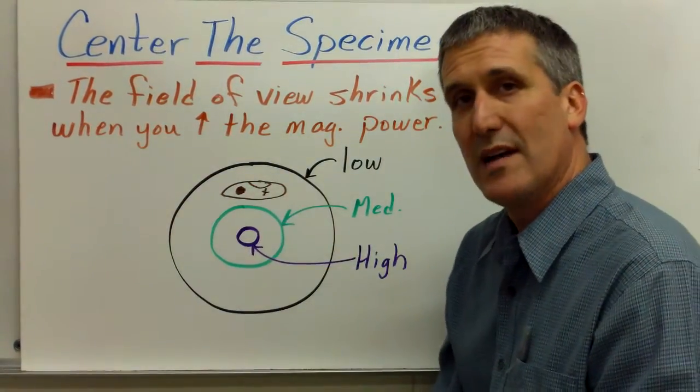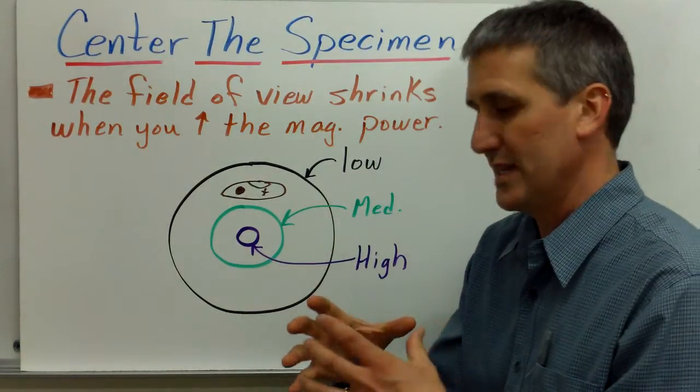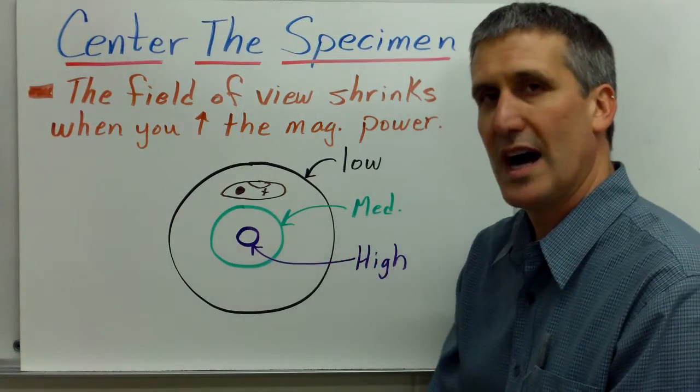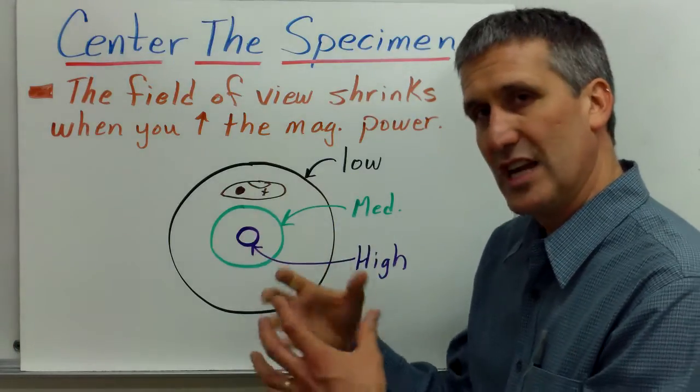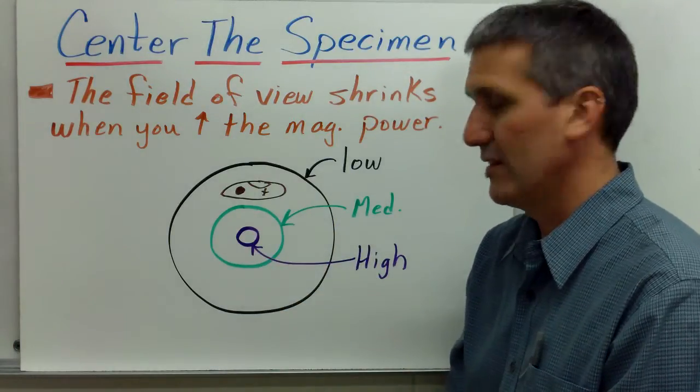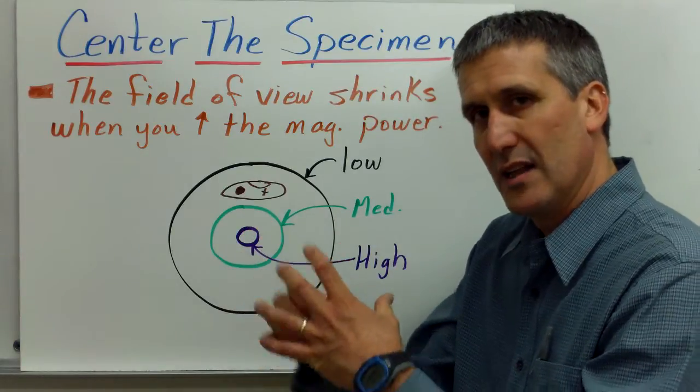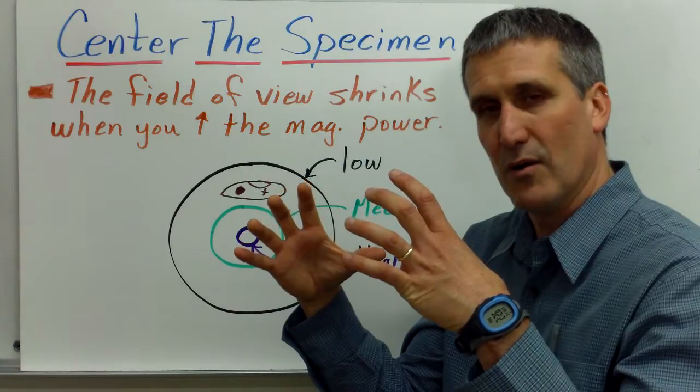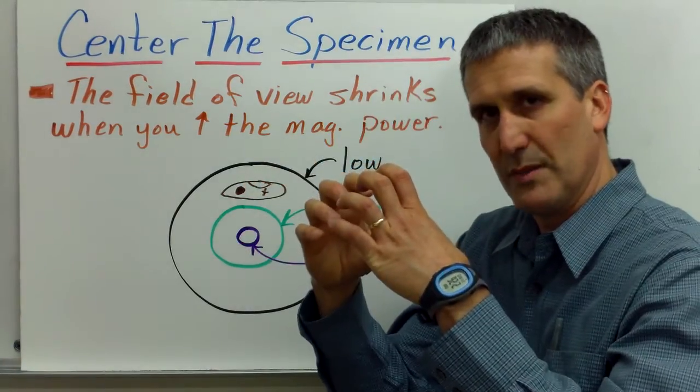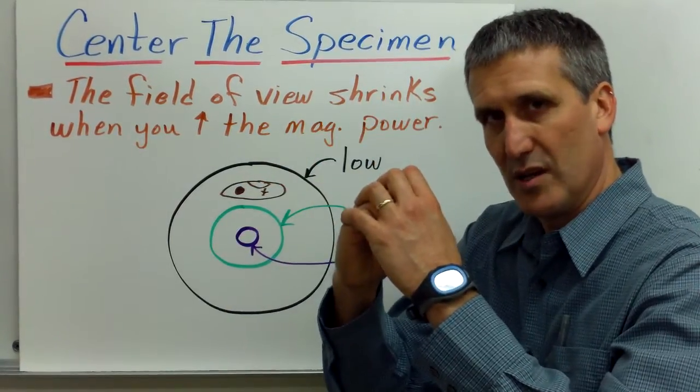Now, the reason that you want to be able to move things around is because it's very important to center the specimen before you switch to a higher objective power lens. That's because when you change and increase the magnification power of the microscope, you actually shrink the field of view. So, you have the largest field of view under low power, then it shrinks when you go to medium, and then it shrinks again when you go to high power.